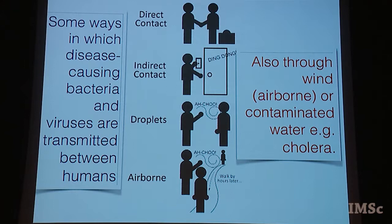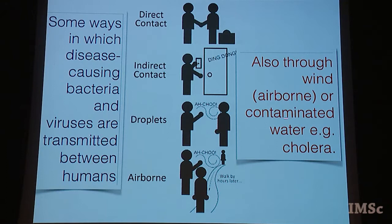How do infectious diseases go from person to person? There are several ways. One is direct contact between people; another is indirect contact — for example, someone pressing a lift button leaves traces of bacteria which someone else can touch later. By sneezing, a person releases droplets into the air which can be ingested by someone else. If those droplets survive in the air for a long time, someone unrelated can pass by hours later and pick them up — that's the airborne route. You can also transmit bacteria through contaminated water, for example cholera, or through wind.